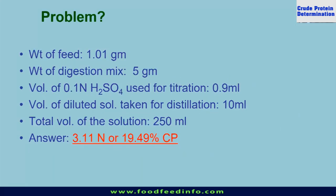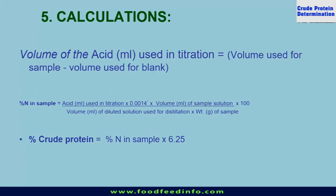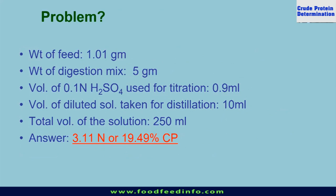Here is a worked example: a feed sample of 1.01g, 5g digestion mixture, 0.9ml of 0.1N sulfuric acid used for titration, 10ml of diluted solution taken for distillation, and total volume of solution 250ml. Putting these values into the formula gives a nitrogen value of 3.11%. Multiplying by 6.25 gives 19.49% crude protein in the feed sample.